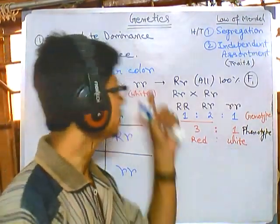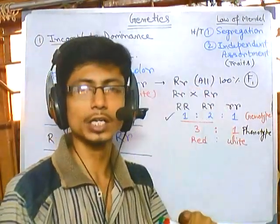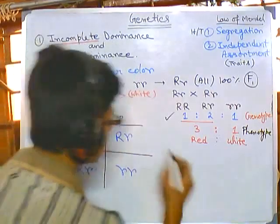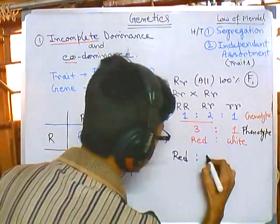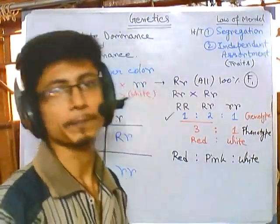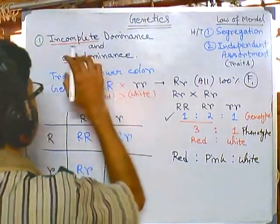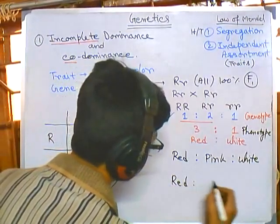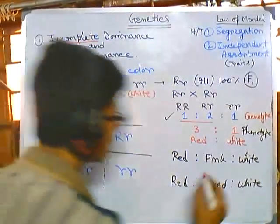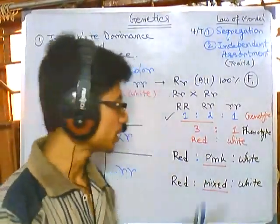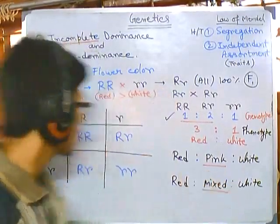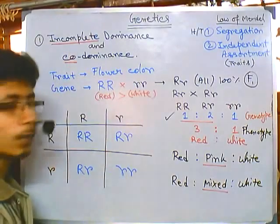In Mendelian inheritance, the phenotypic ratio for a monohybrid cross always gives only two phenotypes — for example, red or white for flower color, or tall or short for height. Nothing intermediate appears. But in the case of codominance and incomplete dominance, a third phenotype emerges. The phenotypic ratio is not only red and white, but also includes pink — giving us three phenotypes instead of two.